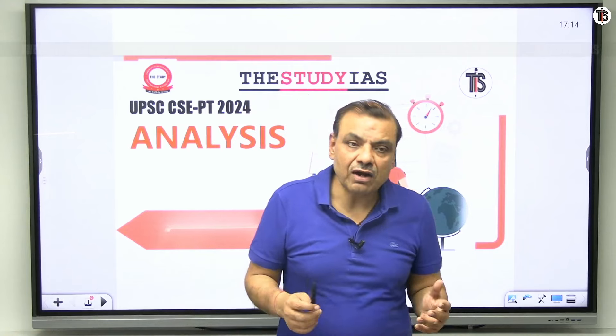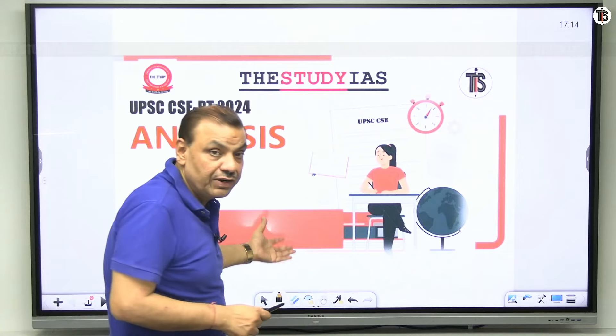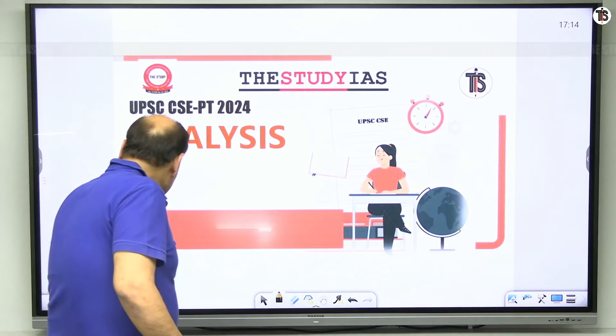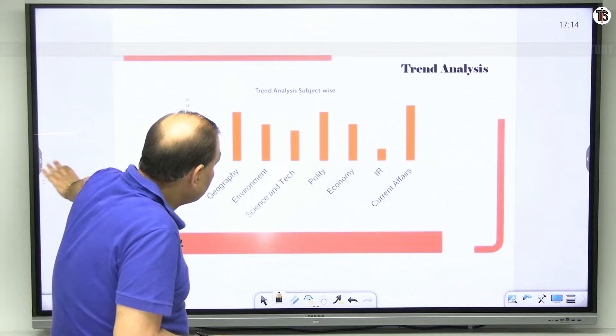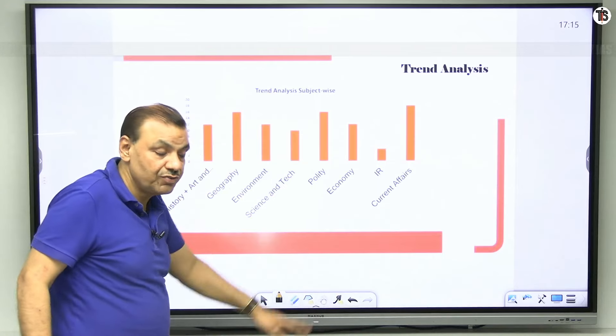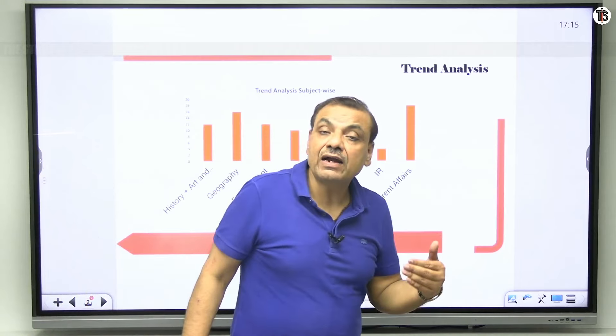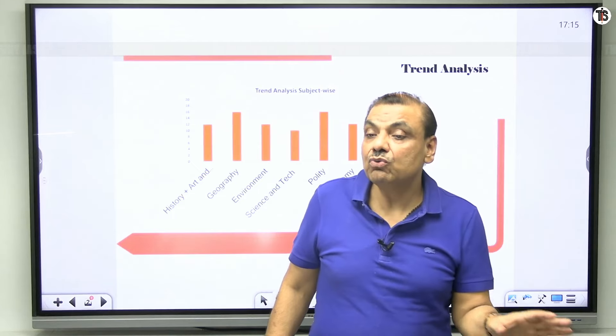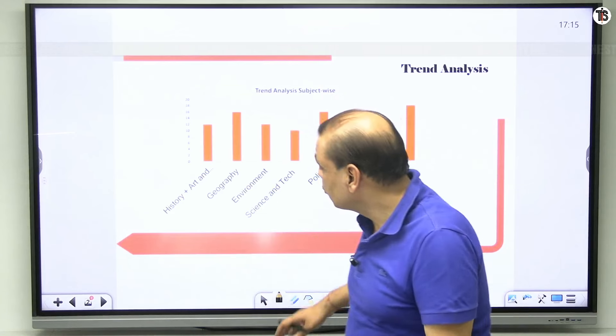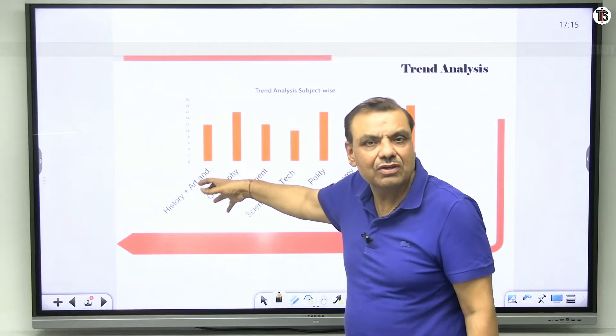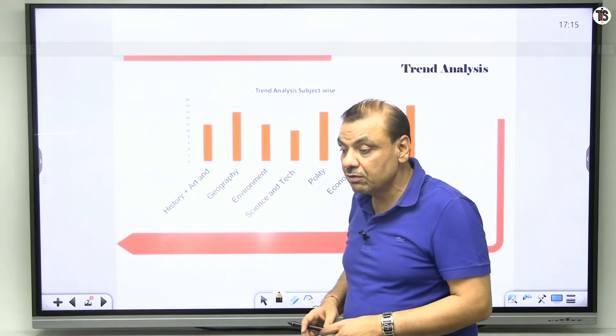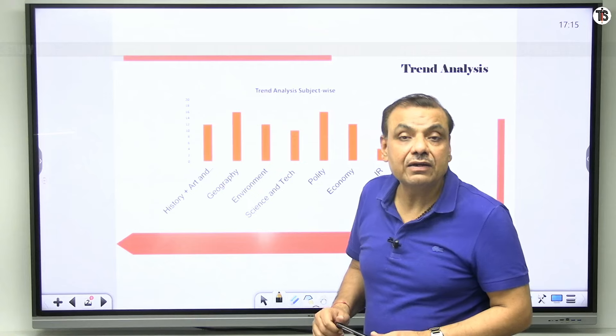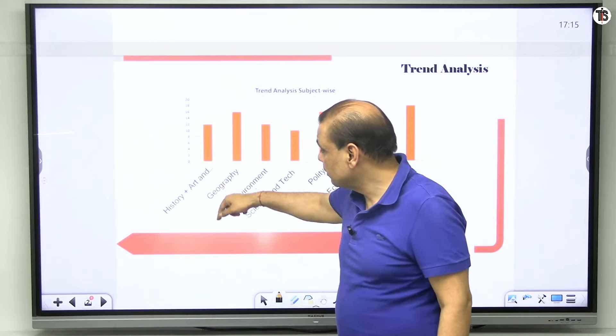So let us start with the topic trend analysis first. So you will observe this diagram and the different segments in the studies. You will come to know UPSC has tried at its best to do some sort of level playing field. 100 percent equality and level playing is not possible, but it has tried at its best. So let us start from history and culture.